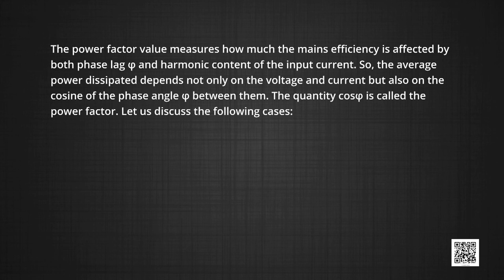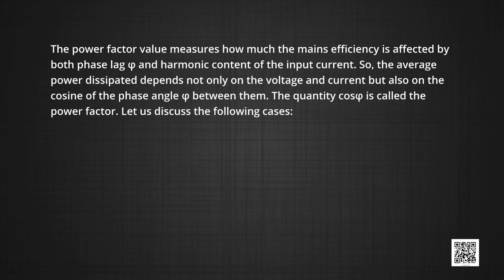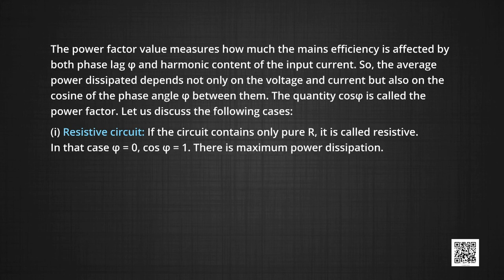Let us discuss the following cases for the power factor. Case 1: resistive circuit. If the circuit contains only pure resistance, it is called a resistive circuit. In that case φ = 0 and cos φ = 1, so there is maximum power dissipation.